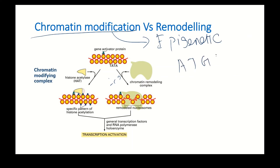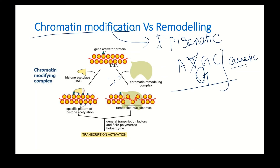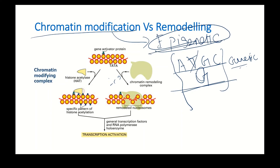If a nucleotide like T is converted into G, that is a mutation — a genetic change leading to a change in gene expression. But with acetylation of histone, gene expression is changed without any change in the nucleotide sequence — the DNA sequence is the same but gene expression is altered. That is why this is called an epigenetic change: above the level of the nucleotide sequence.